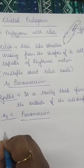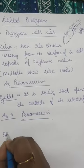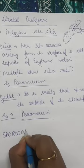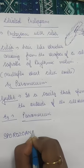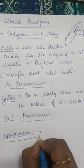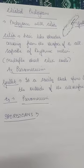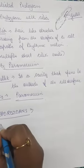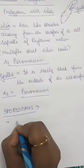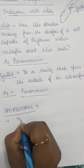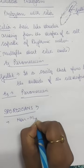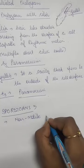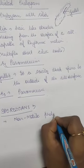The last group of protozoans is sporozoans. These are non-motile protozoans — they cannot move at all. So far we learned: amoeboids move with pseudopodia, flagellated protozoans move with flagella, ciliated protozoans move with cilia — but sporozoans are not motile.